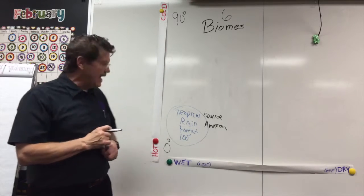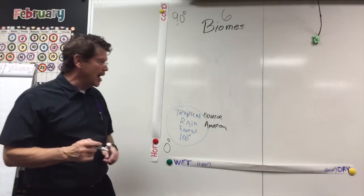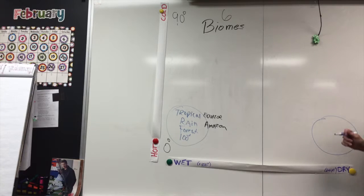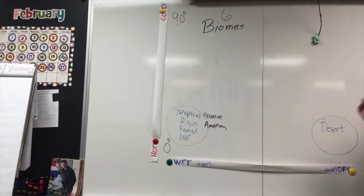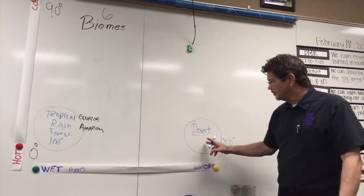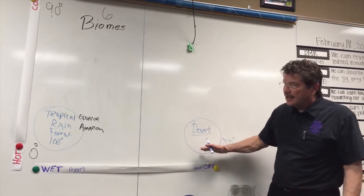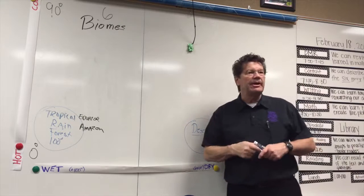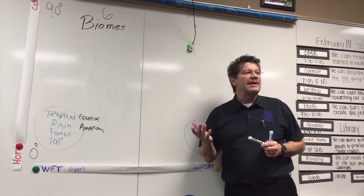There is another type that's very hot but very dry. Anybody know what that is? The desert. So the desert is over here on our chart. A desert — how many S's in desert? Only one. A desert has less than 10 inches of rain every year. So our desert is hot but dry, and it has a lot of different animals.